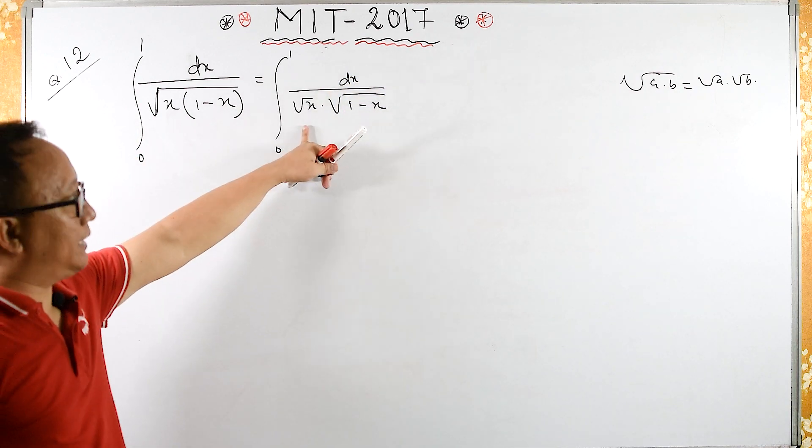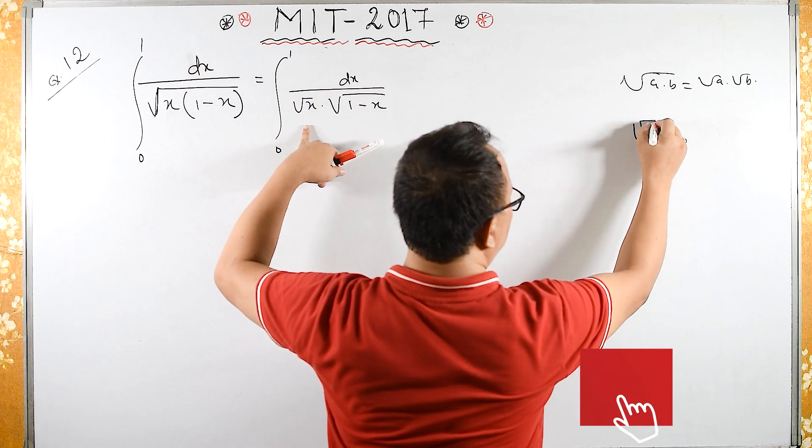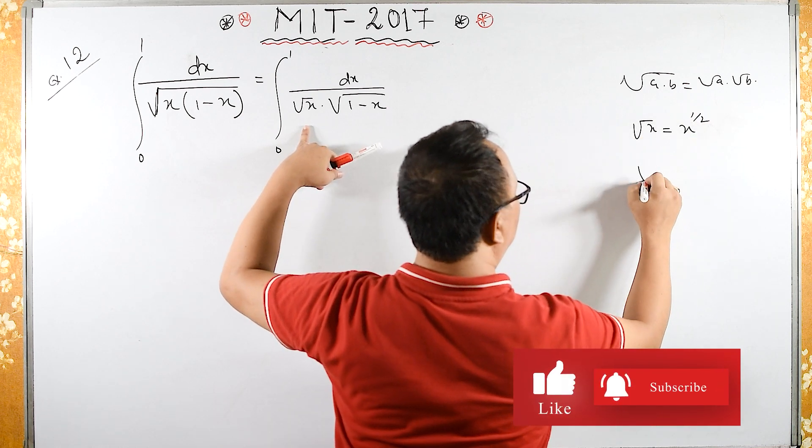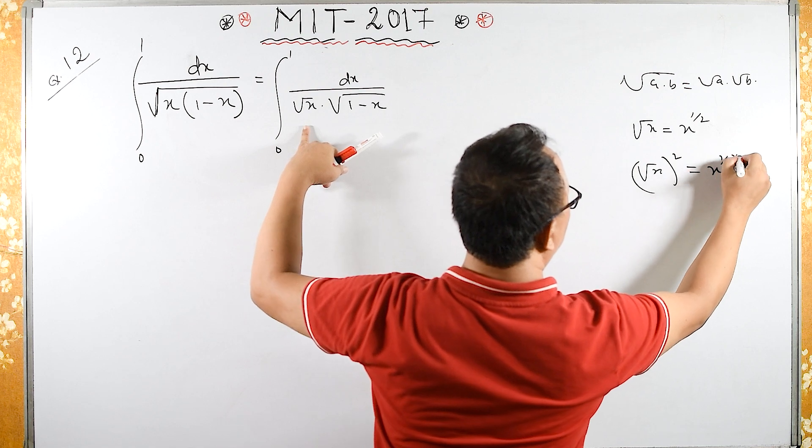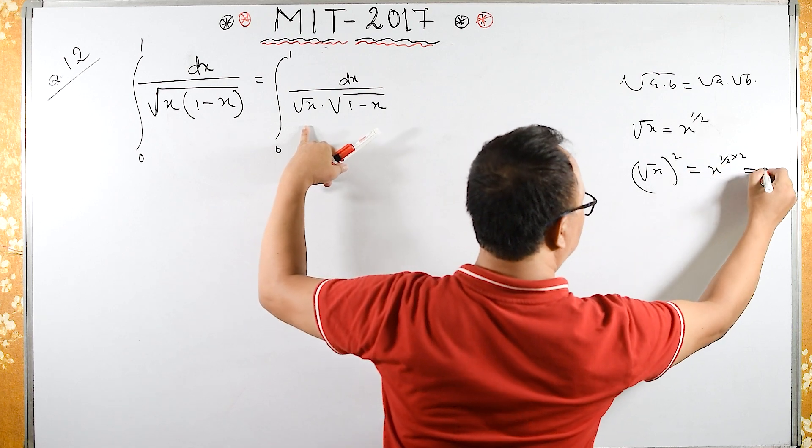What is square root of x? Square root of x is x raised to the half, and square root of x the whole squared is x raised to half times 2. The 2 gets cancelled, so this is the same as x.